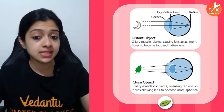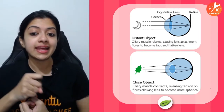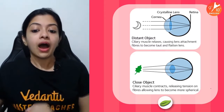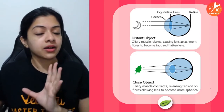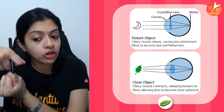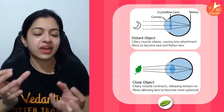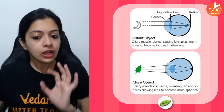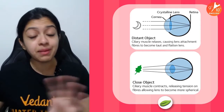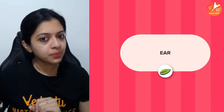When you look at a distant object, the ciliary muscles relax, causing the lens to become taut and flat. When you look at a nearby object, the ciliary muscles contract, releasing tension on the fibers and allowing the lens to become more spherical. So for close objects, the biconvex lens becomes more curved. That is the mechanism of accommodation in the human eye.